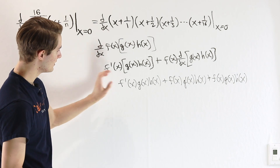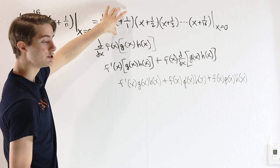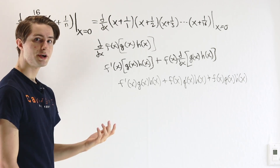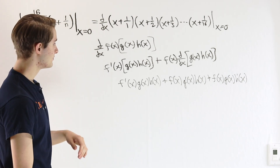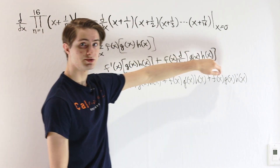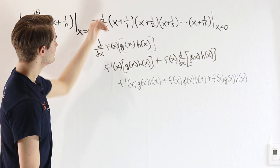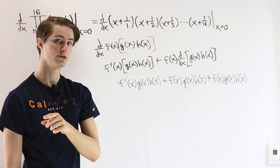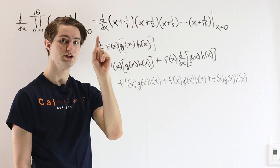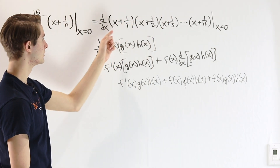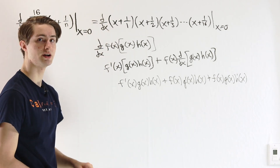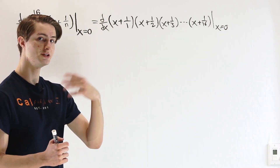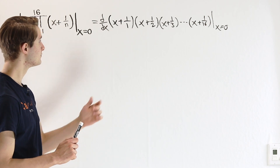When we take this idea and extend it to a product of 16 functions, we're going to have a sum of 16 different terms instead of three. In each of those terms, we differentiate just one of the factors in the product. So let's write out what some of those terms will look like when we differentiate.